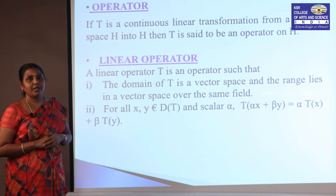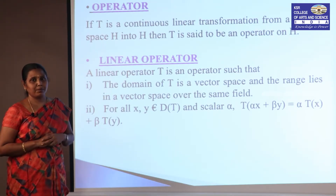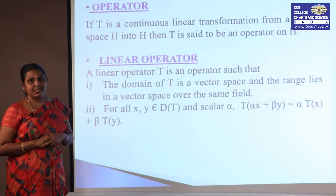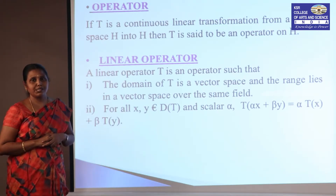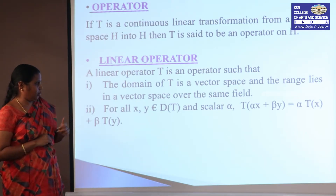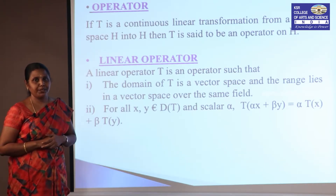If T is defined from a Hilbert space to a Banach space, then T is said to be a transformation. When domain and co-domain are the same space, T is called an operator. For a linear operator, the condition is: T(αx + βy) = αT(x) + βT(y), where α and β are scalars and x and y are vectors in the Hilbert space.